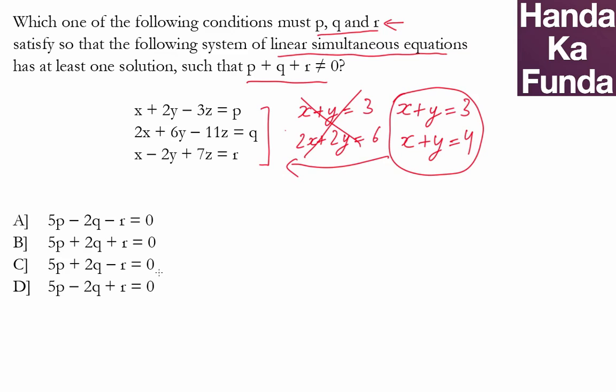So suppose if I take randomly, let's say if I take option C and I do 5p + 2q - r, what will be the coefficient of x? So 5p will mean 5x, 2q will mean 4x, minus r will mean minus x. So I have 5x + 4x - x which will give me 8x. So whatever happens, 5p + 2q - r will not come out to be 0.